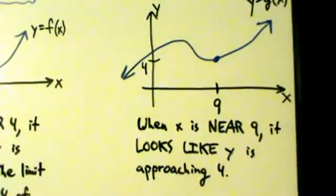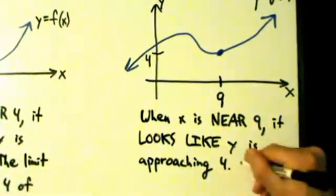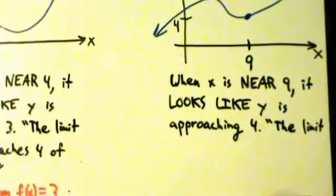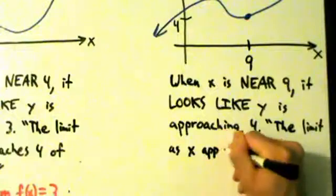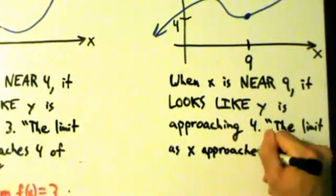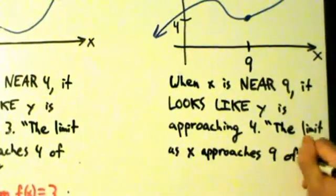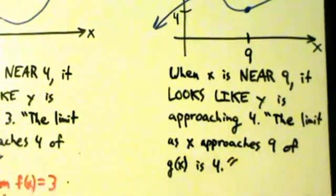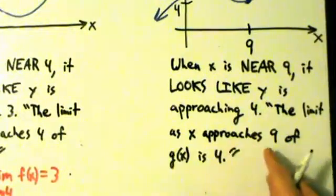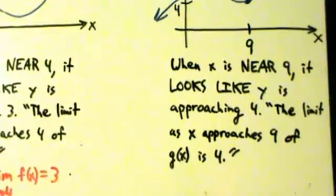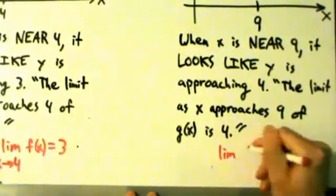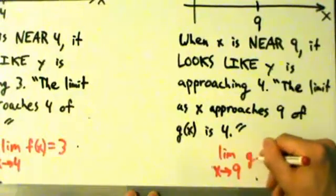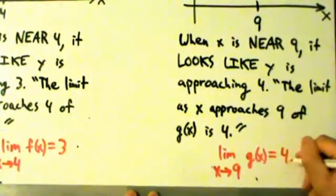So when x is near 9, it looks like y is approaching 4. How do we express that in terms of limits? Just like before, we say: the limit as x approaches 9 of g of x is 4. And how do we write that in limit notation? Also just like before: lim, with x right-arrow 9 underneath, and this time our function is g of x, equals 4. So the limit as x approaches 9 of g(x) is 4.